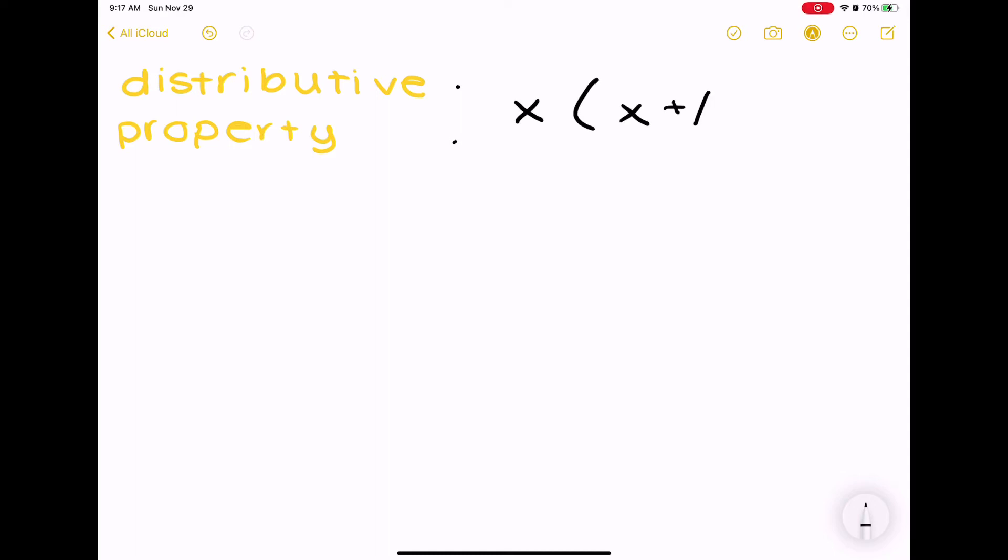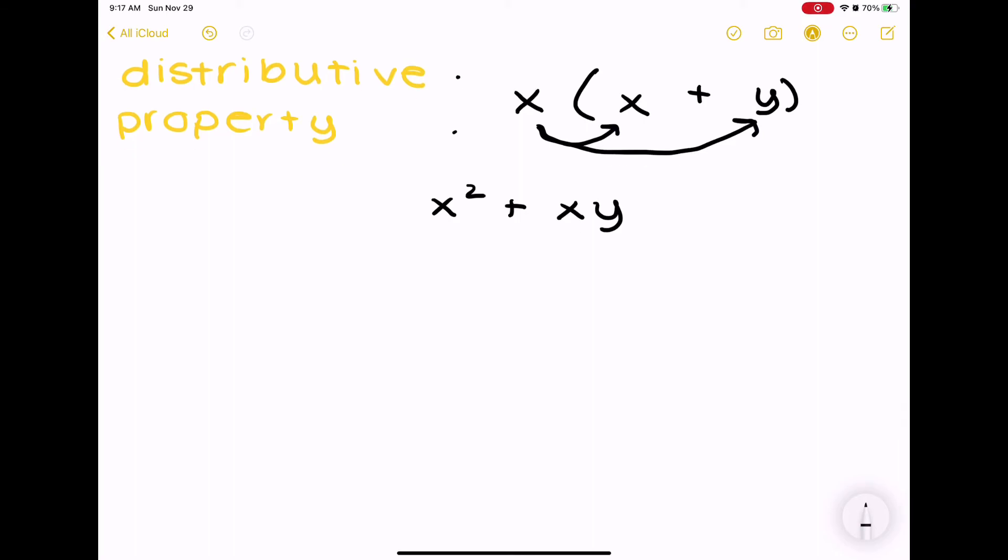Distributive property is more used in algebra, but I thought I'd throw it in. And it's if you have something like x and then in parentheses x plus or minus y, well, then you would take x and multiply it to x and you'd multiply it to y. And the sign will stay the same.